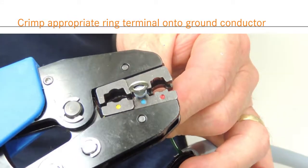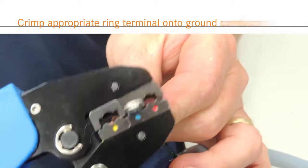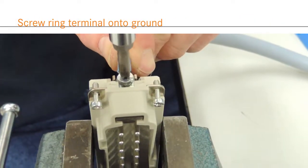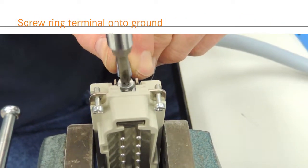Terminate the ground with the appropriately sized ring terminal and crimp tool. Wire the ground by fixing it in place with the ground plate and screw.